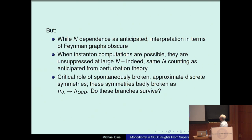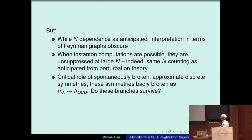While the N-dependence is as anticipated, the interpretation in terms of Feynman diagrams is obscure. Interestingly, when instanton computations are possible, one finds the same N-counting as anticipated from perturbation theory — one doesn't see an exponential suppression, one sees power law behavior with N as expected from looking at Feynman diagrams.